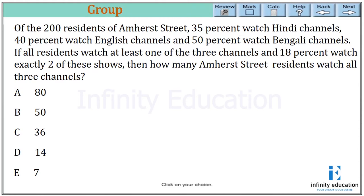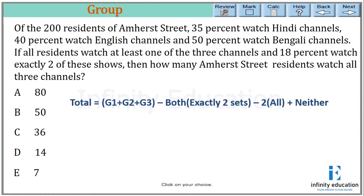Of the 200 residents of Ama Street, 35% watch the Hindi channel, 40% watch the English channel, and 50% watch the Bengali channel. If all residents watch at least one of the three channels and 18% watch exactly two of the channels, then how many Ama Street residents watch all three channels? Since the data is in percentages, we will use the three-group formula and consider the total as 100 to simplify calculation, then multiply the result by 2 since the actual total is 200.